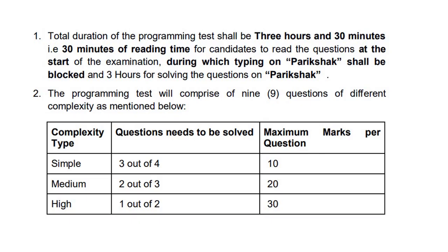What sort of questions will be coming? You will have overall 4 plus 3 plus 2 questions, which equals 9 questions. You don't have to attempt all 9. There are three categories: simple, medium, and high level. Simple and medium questions will be easy, but high level questions will be a bit tough. In the simple level you have the choice to leave out one question. For medium, you also have a choice to leave one question. For high level, you have a choice to leave one question as well. So out of 9 you can attempt 6, but in every category you can leave only one.